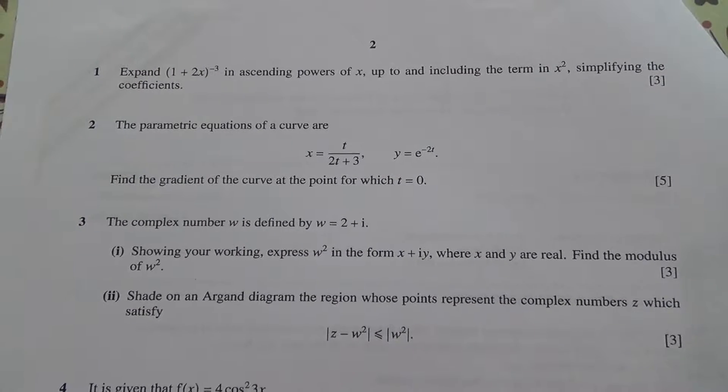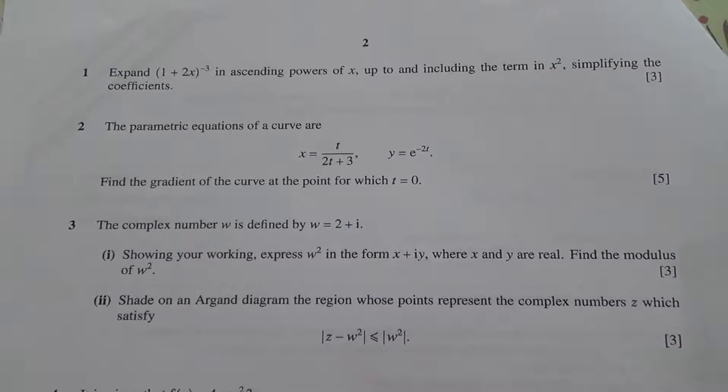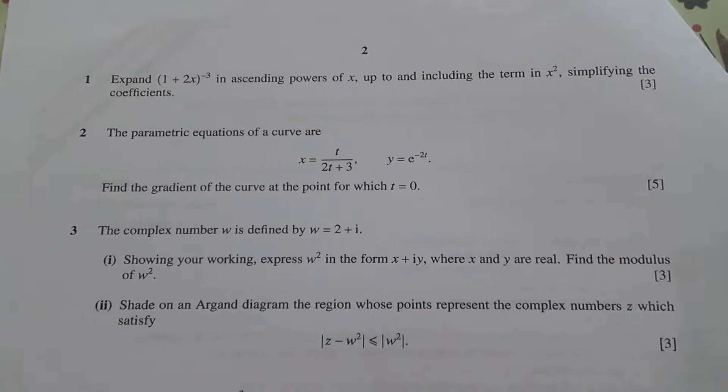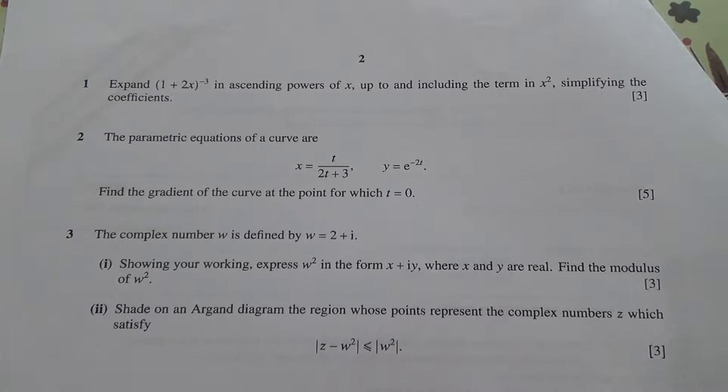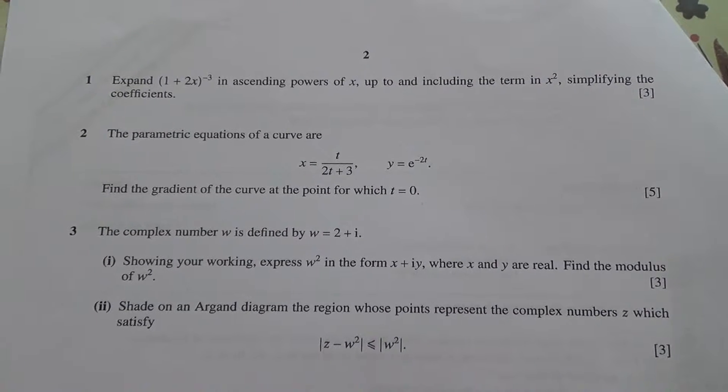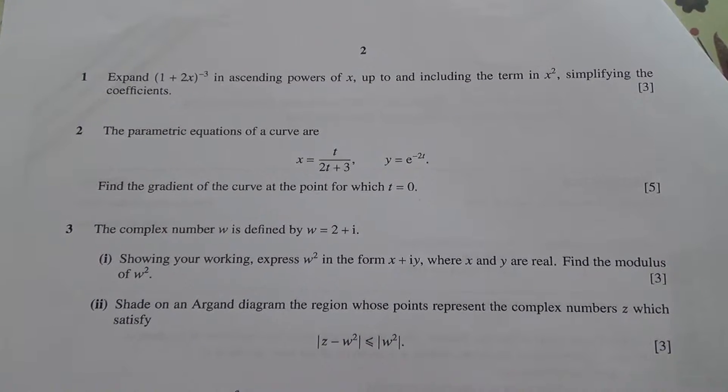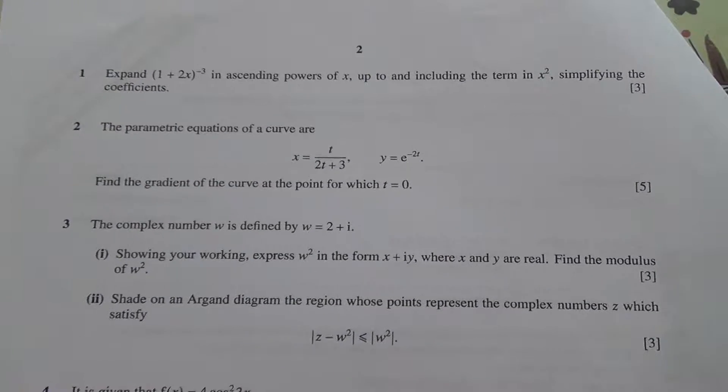Hi, for question number 2 from October 2010, A-level maths HSC P3, the parametric equations of a curve are x equals t over 2t plus 3, y equals e to the power of minus 2t, and we need to find the gradient of the curve at the point for which t equals 0.